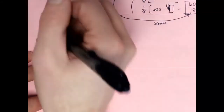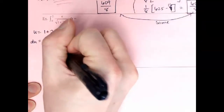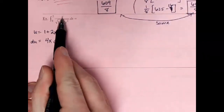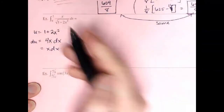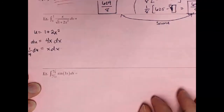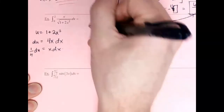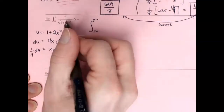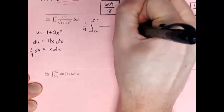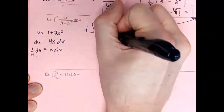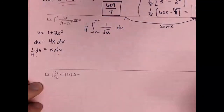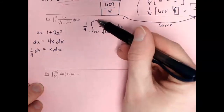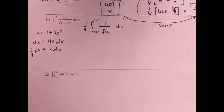For the next example, assign u = 1 + 2x². The derivative of 2x² is 4x, so du = 4x dx. I only have x dx, so I divide both sides by 4, giving x dx = (1/4) du. Switching over: I put squiggles for the limits since I'm going to reverse substitute, and x dx becomes (1/4) du, leaving the square root of u on the bottom — that's u to the negative one-half power.